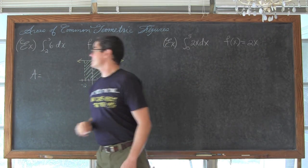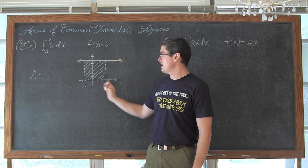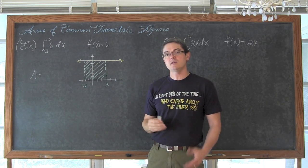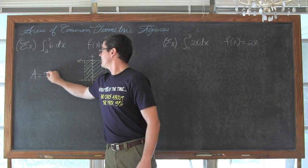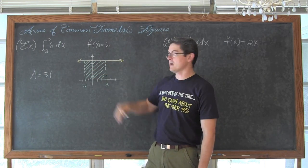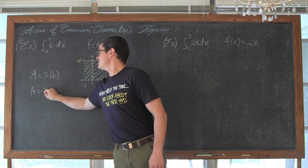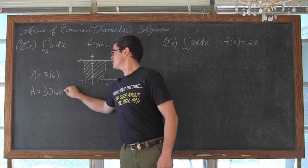So our area is going to be equal to the width of this rectangle, and the distance between negative 2 and 3 is equal to 5. And the height of the rectangle, of course, since we are bound between the function and the x-axis, we have a height of 6. So our area is equal to 30 square units.